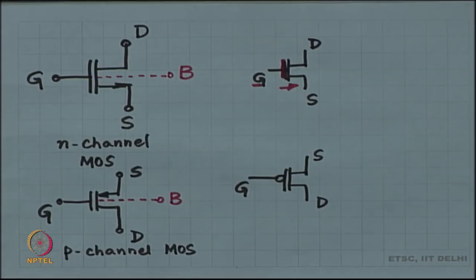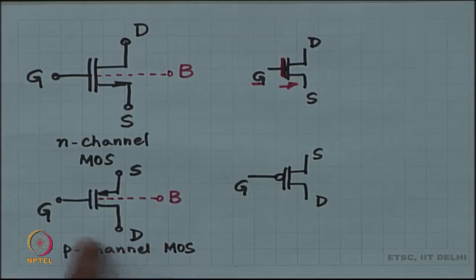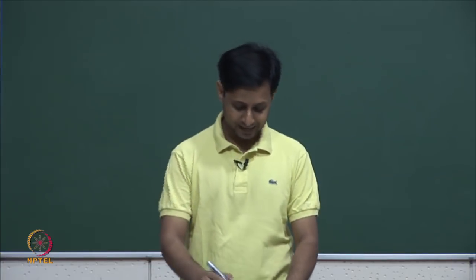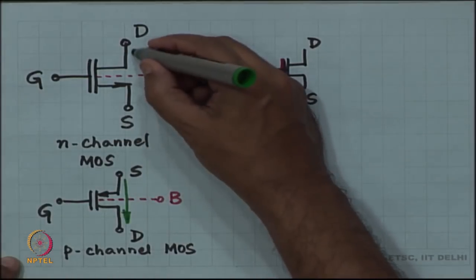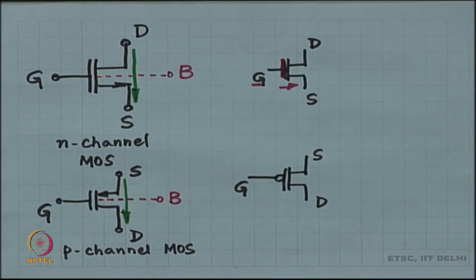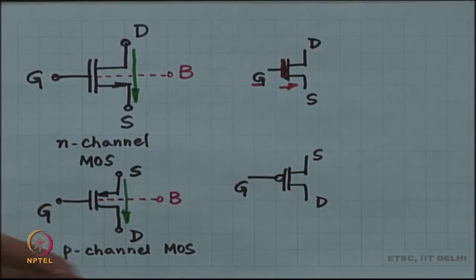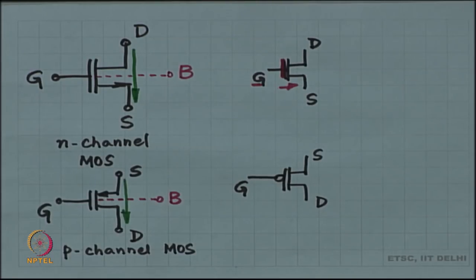In the P-channel MOSFET, the source is placed on top and the drain at the bottom for a reason: we want to show that current always flows from top to bottom. In the N-channel MOSFET, current flows from D to S. In the P-channel MOSFET, current flows from S to D, which is why the symbol is flipped with S on top and D at the bottom. The arrow is always in the direction of the flow of current.